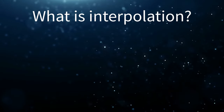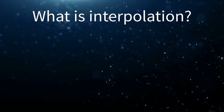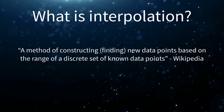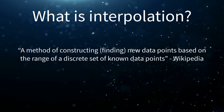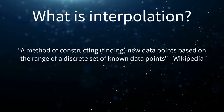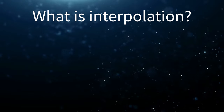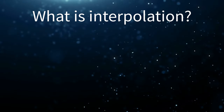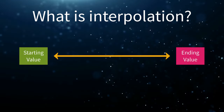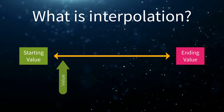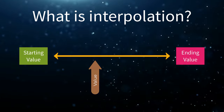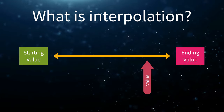Before we jump into Unreal, let's take a moment to understand the underlying methods we will use to apply movement. Interpolation is a method of constructing or finding new data points based on the range of a discrete set of known data points. In other words, by using interpolation we can take two values, say a starting and an ending value, and estimate other values in between for a smooth transition from one value to another.